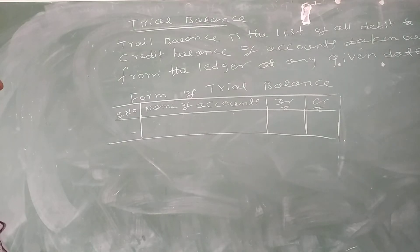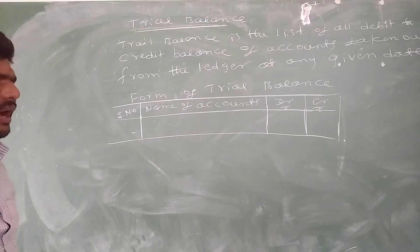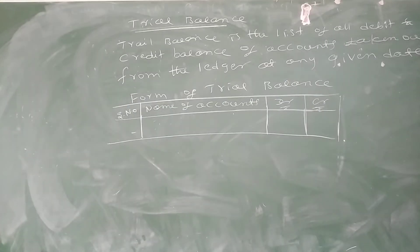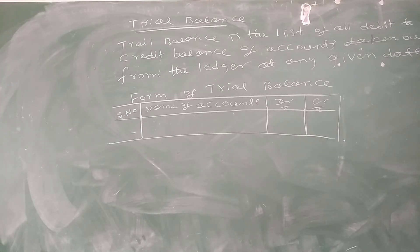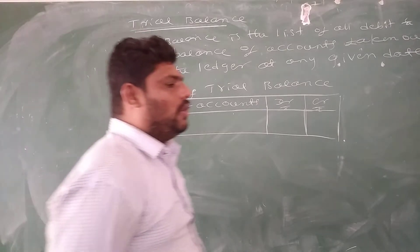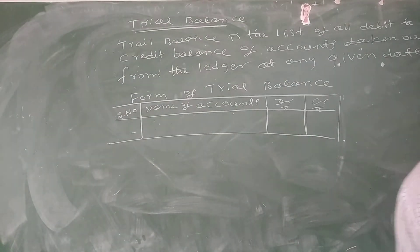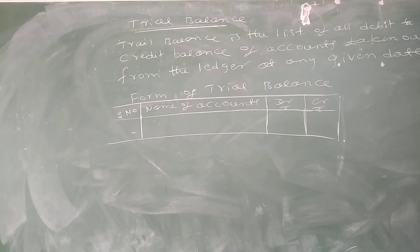If you have a credit or debit and credit balance, you can use the credit as a debit and debit. Trial balance is used to find out the profit or loss for the year ending period, and it is helpful for preparing the final accounts of the company.